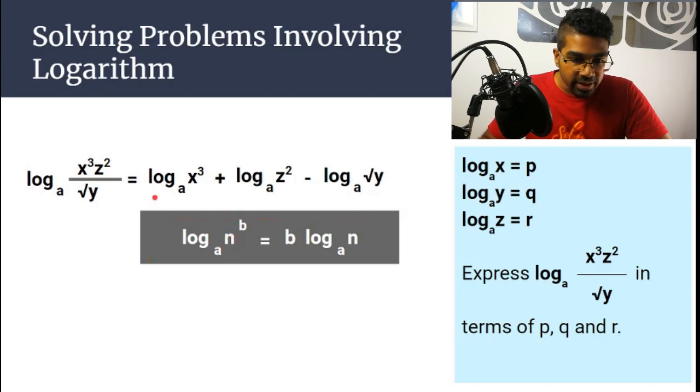So let's look at our question again. So here we have log_a(x³), log_a(z²), and log_a(√y). Now we don't want this square root of y because we don't know what the number is to take in front. So we convert the square root to the power of half. So to the power of 1/2, now we have all our numbers.